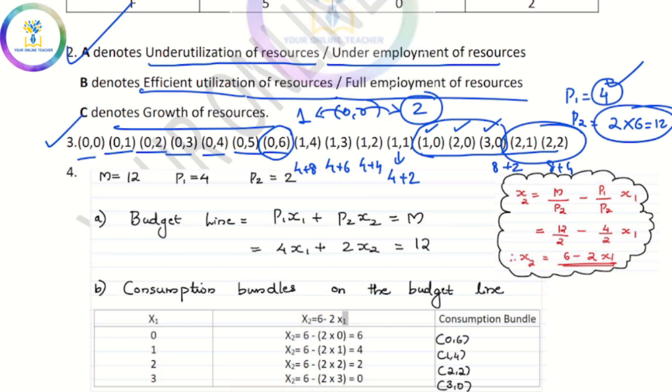We don't have to pay for 12. We don't have to pay for any combination. We don't have to pay for the budget.